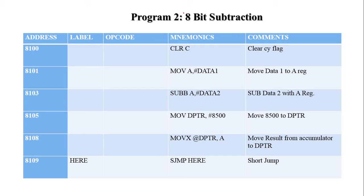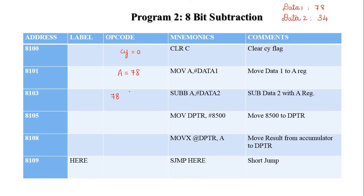Program 2: 8-bit subtraction. Consider two data values. Data 1 is 78H. The first instruction is CLRC — carry value equals 0, clearing the carry flag. Then 78H is moved to the accumulator register. SUBB means subtract with borrow — the accumulator content is subtracted by Data 2, which is 34H. So 78H minus 34H gives the answer 44H.